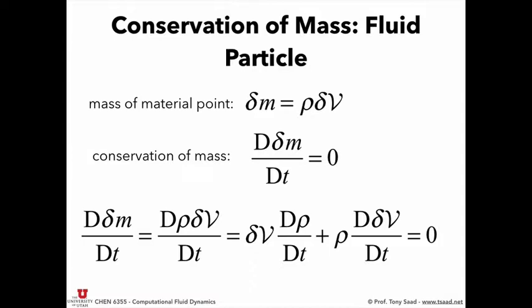We did the derivation in different ways: using material systems, then material elements which are fluid particles, then using a finite control volume, then a differential control volume — the difference being an integral versus a differential form. You can go back and forth between the two. We discussed how the Reynolds transport theorem and the material derivative are two sides of the same point. Essentially, the material derivative is the Reynolds transport theorem in differential form, applied for a material point or a fluid particle.